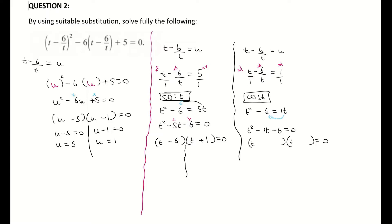So one of my two solutions for t: t minus 6 equals 0, therefore t equals 6. T plus 1 equals 0, t equals negative 1.